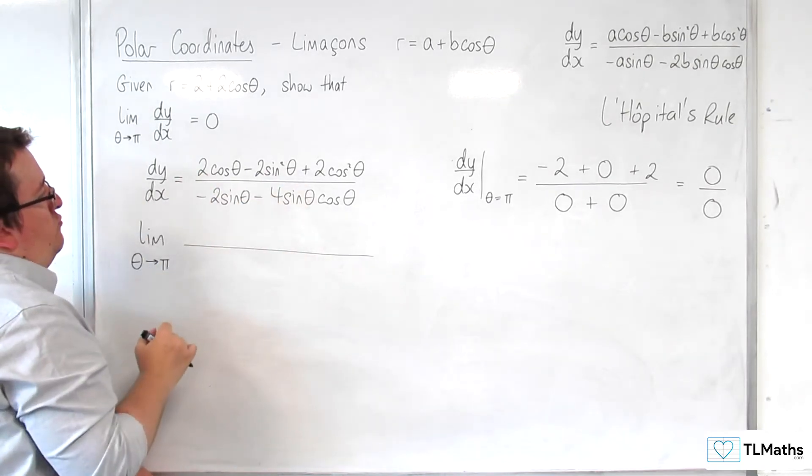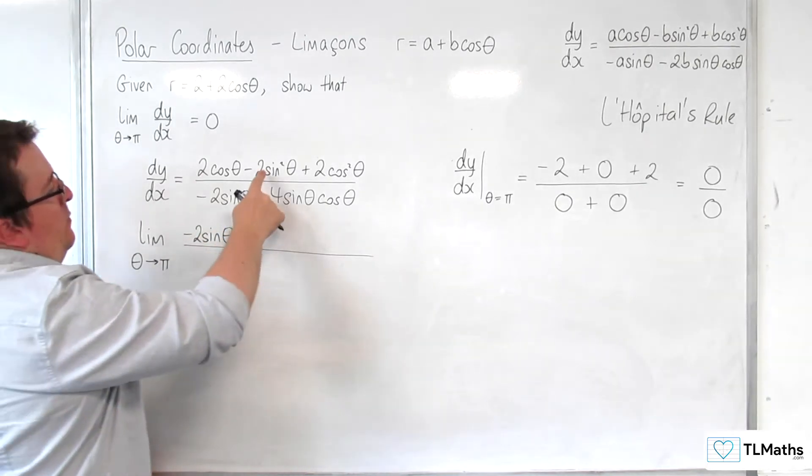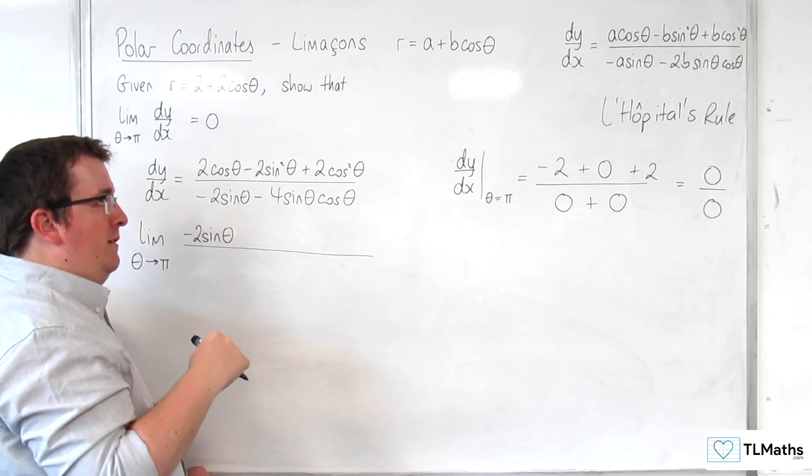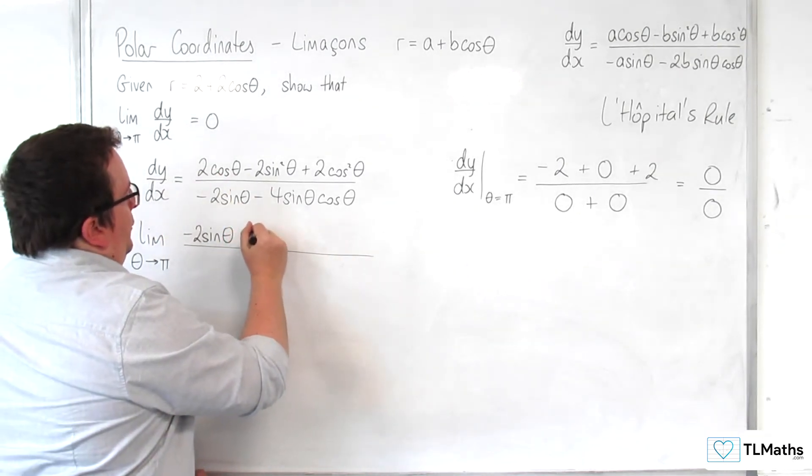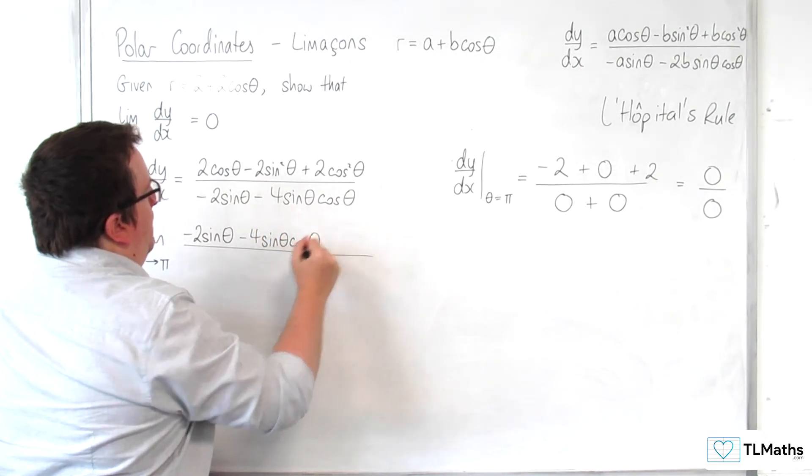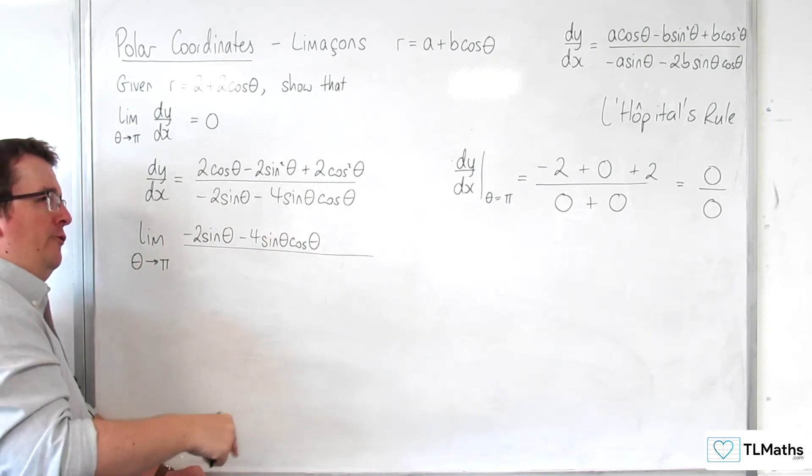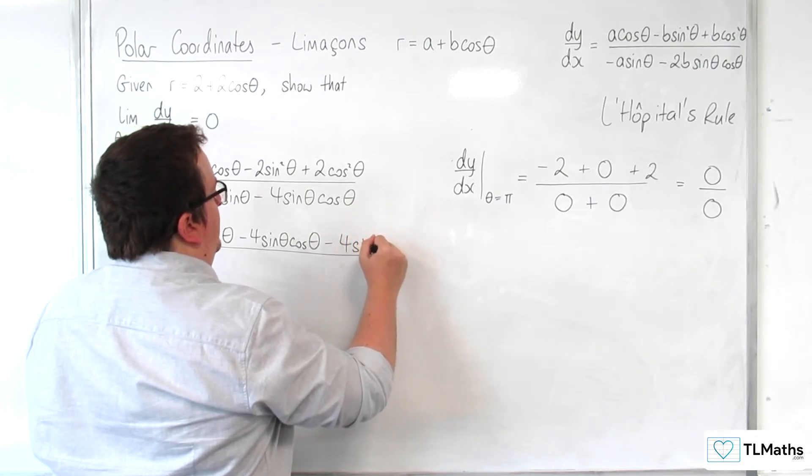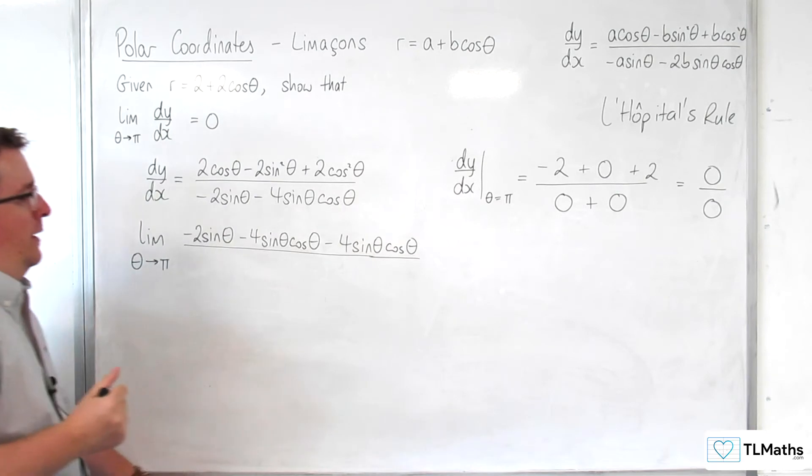So differentiating the numerator, we're going to get minus 2 sine theta. Then we've got to differentiate this. Now, 2 is going to come down to the front. The derivative of sine theta is cosine theta. So we're going to get minus 4 sine theta cosine theta. And differentiating 2 cosine squared, the 2 is going to come down to the front. The derivative of cosine is minus sine. So minus 4 sine theta cosine theta.